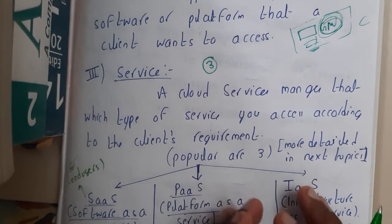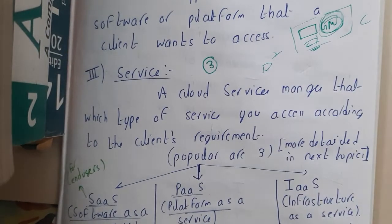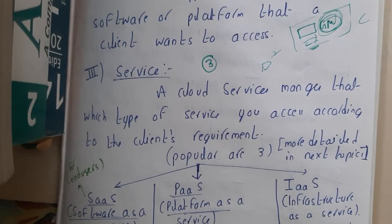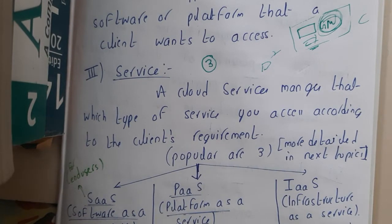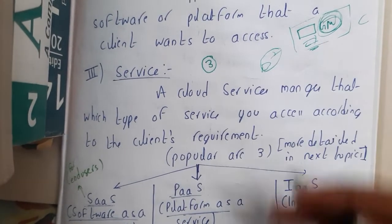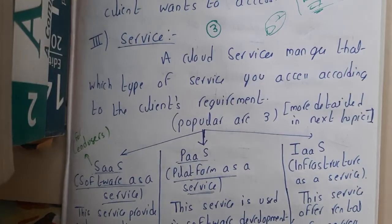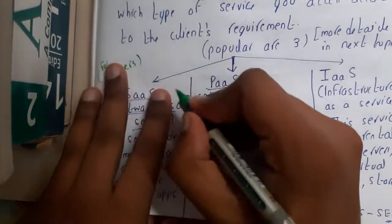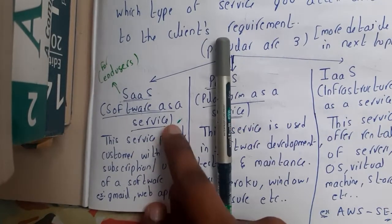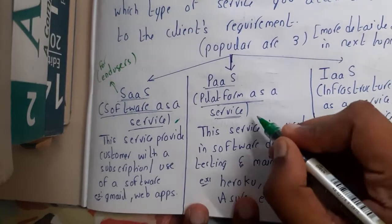We can do various operations on the cloud. For example, if you want to just run an application — like the website ilovepdf, which helps you combine PDFs and do operations on PDFs — that is some kind of application or software. If you are buying cloud just to do those kinds of operations like merging PDFs, that comes under Software as a Service.